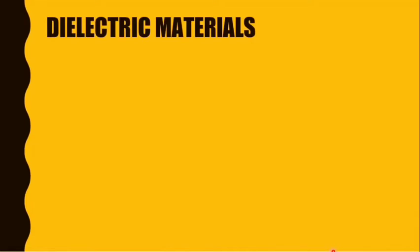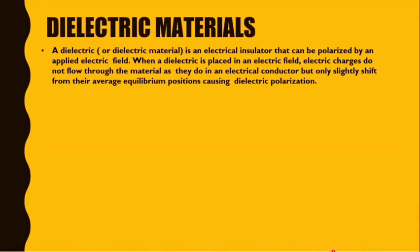First of all, we will know what a dielectric material is. A dielectric, or dielectric material, is an electrical insulator. An electrical insulator is a material in which electrons do not flow freely, or you can say that the atoms of the insulator have tightly bound electrons. In simple words, electric charges do not flow freely.